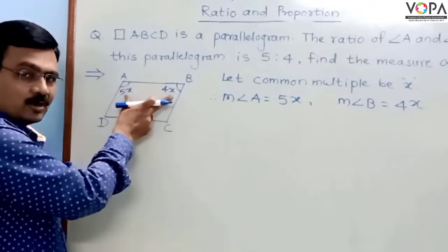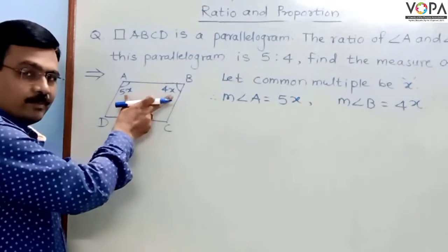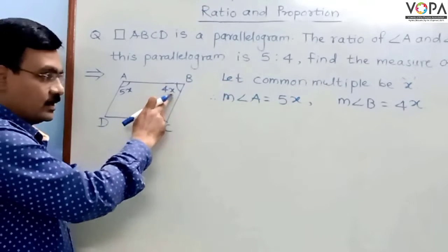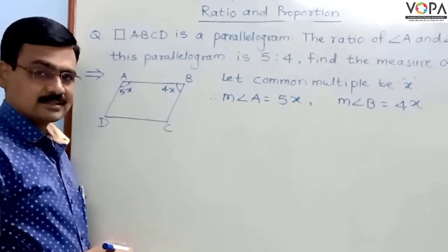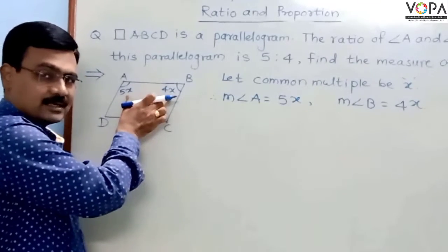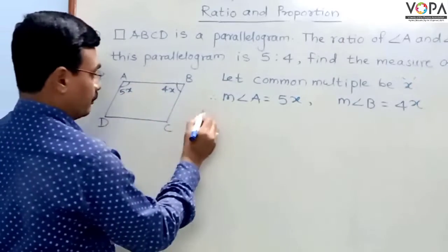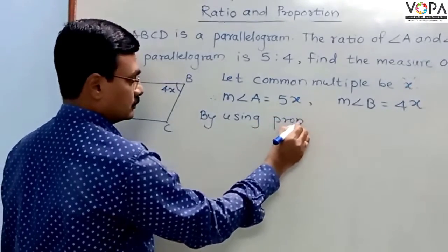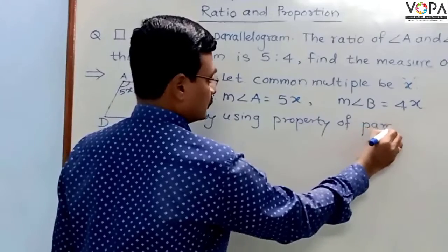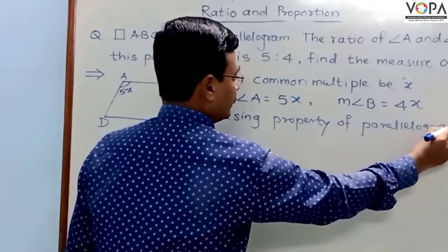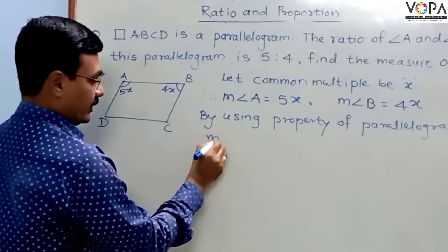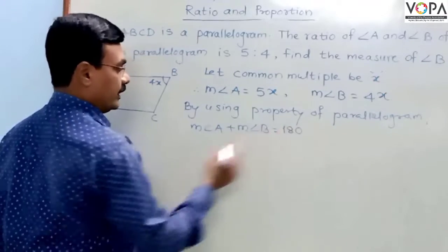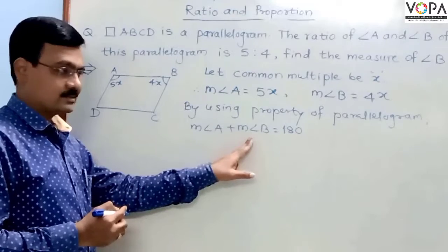There is the property of parallelograms: adjacent angles of a parallelogram are supplementary. Supplementary means the sum of their measures is 180 degrees. So, by using the property of parallelograms, we can write measure of angle A plus measure of angle B equals 180.